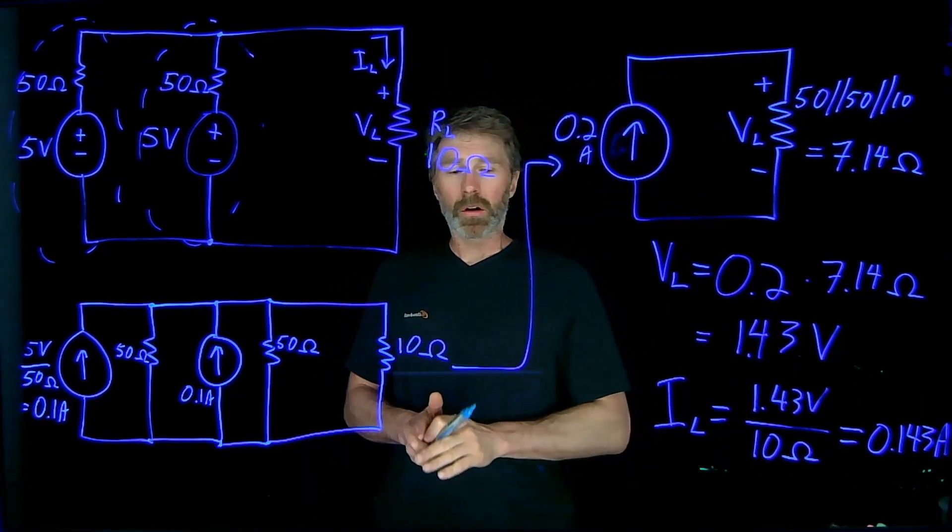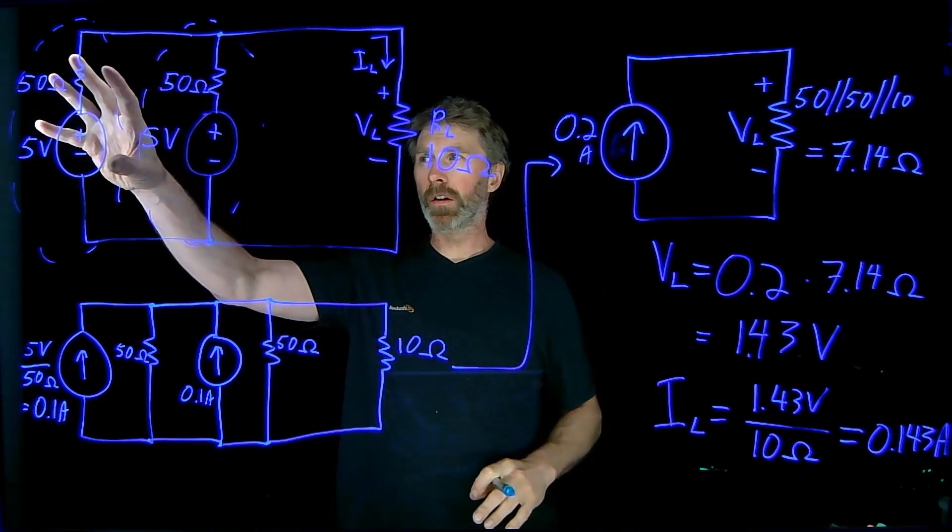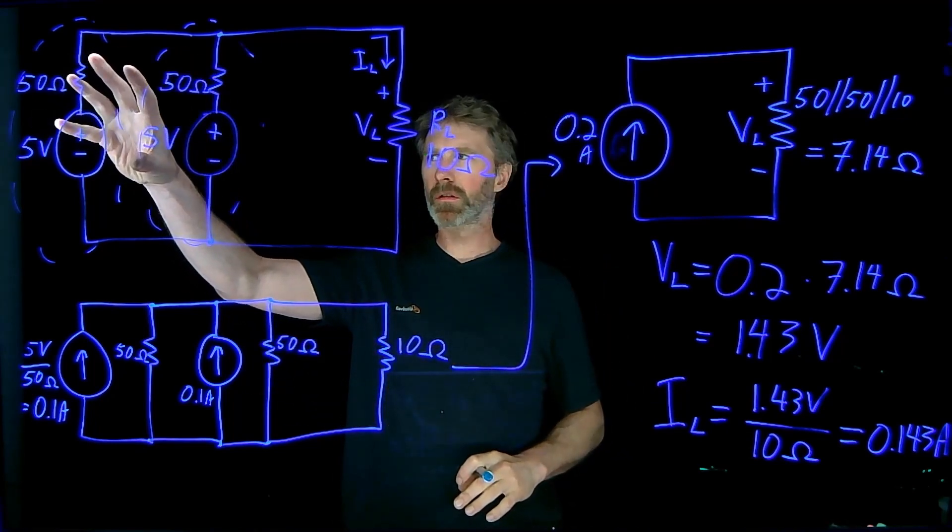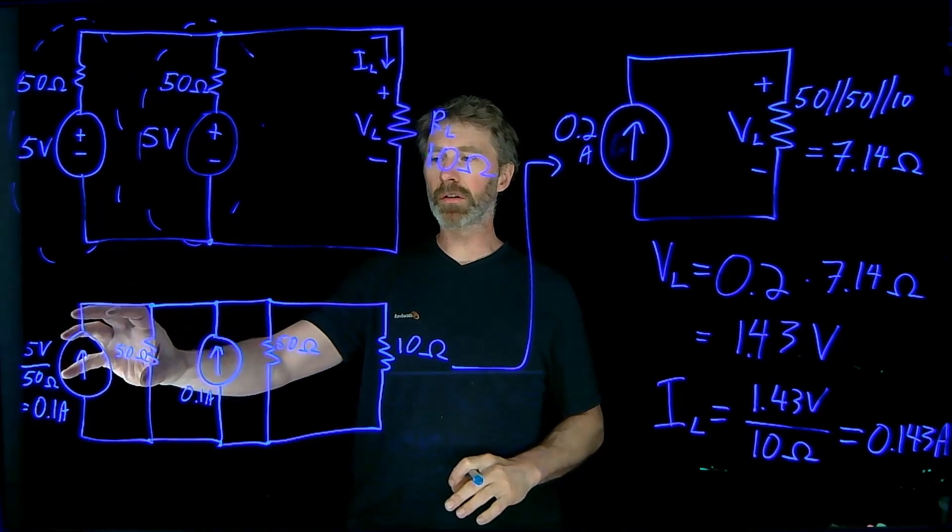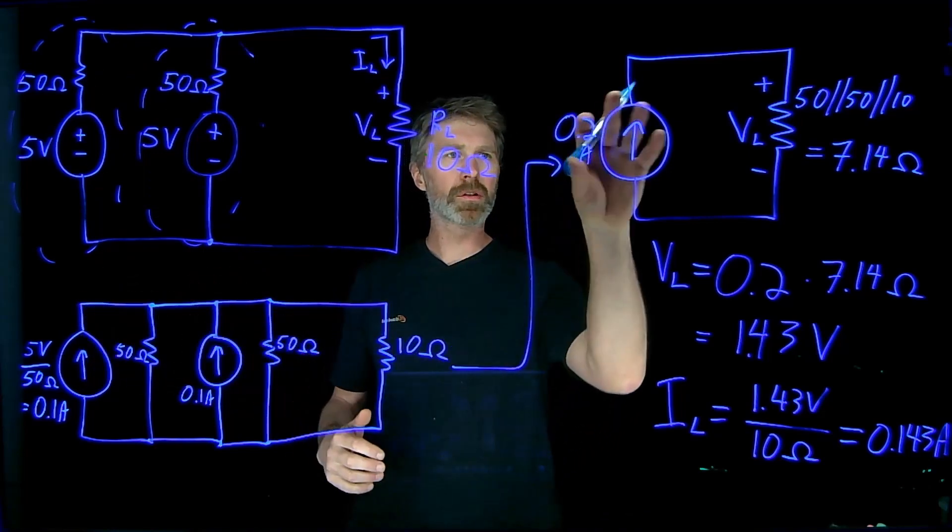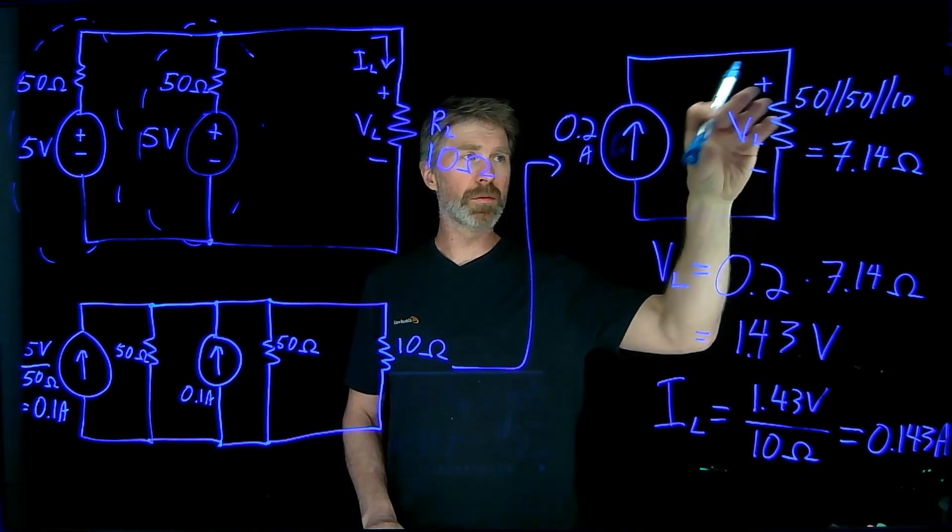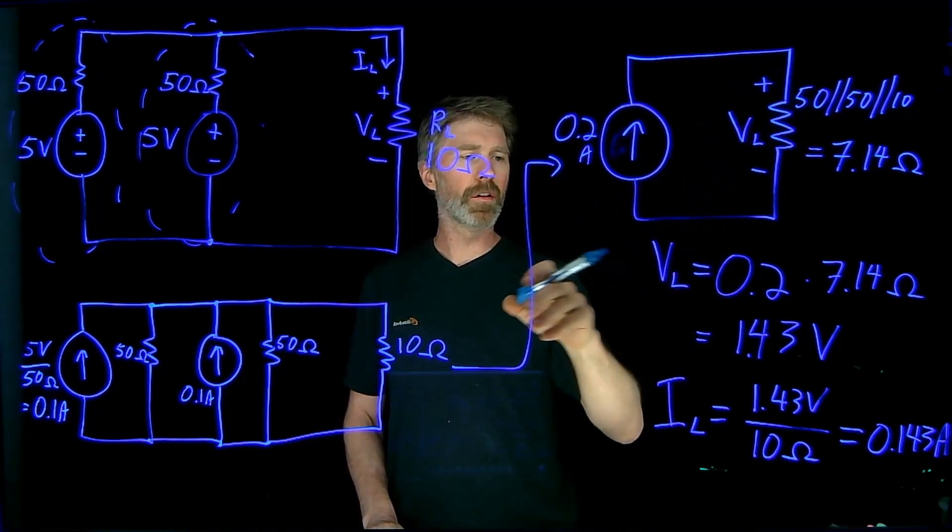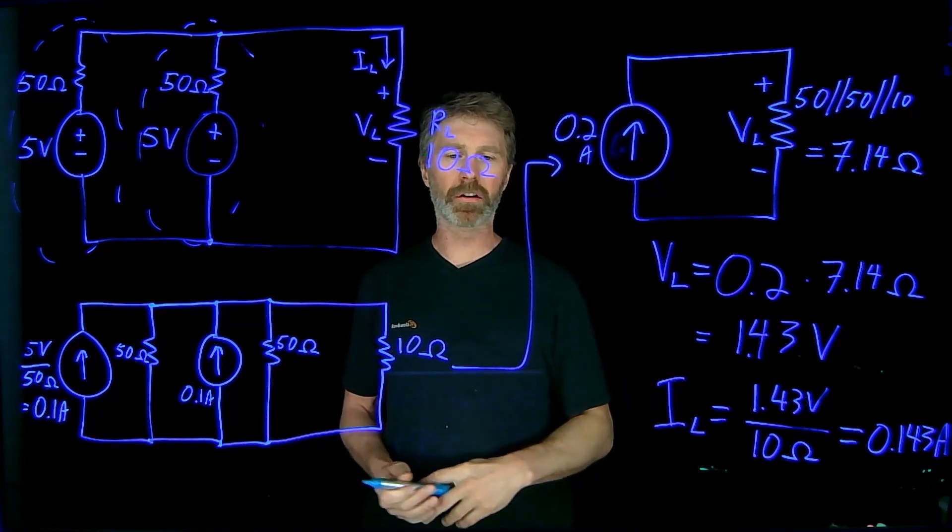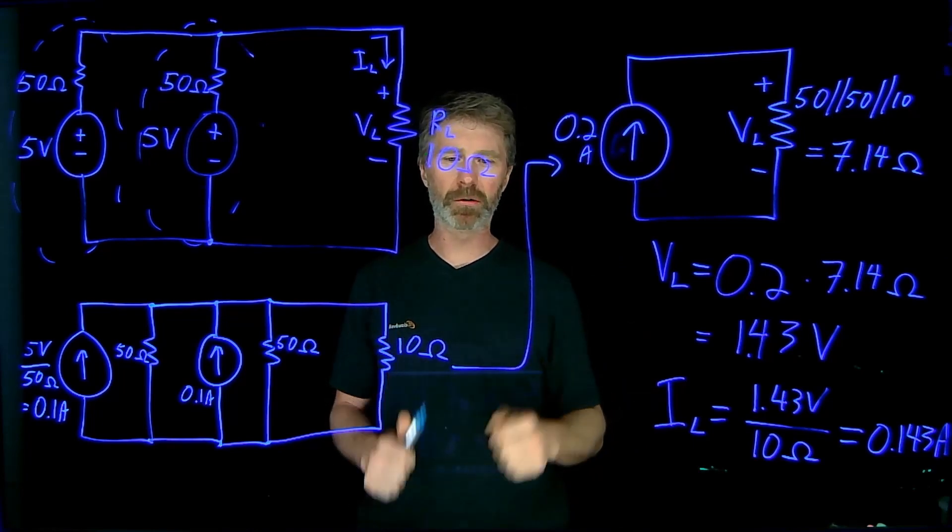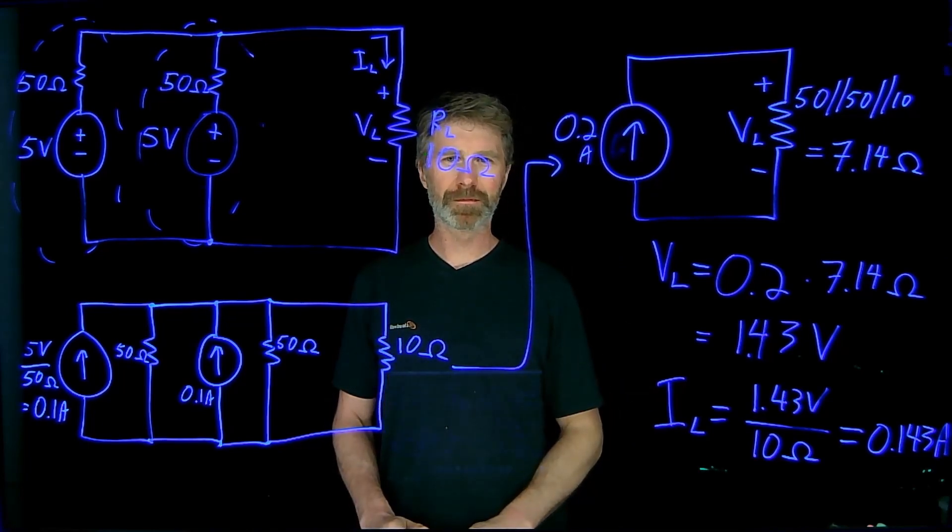So overall what we did, we converted the voltage sources into current sources, combined current sources to give me one overall source, combined resistors in the circuit to give me one overall resistance, figured out the voltage, and then calculated the current. Very simple. Thank you for watching. See you in the next video.